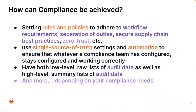How can compliance be achieved? Some key elements include setting rules and policies to adhere to workflows, having a single source of truth, and having high-level and low-level audit data. It's important not only to have frameworks in place but also to observe when people find workarounds. Having auditable data is very important, especially during security or IT audits. Compliance needs may also exist at an organization or team level beyond just regulatory requirements.